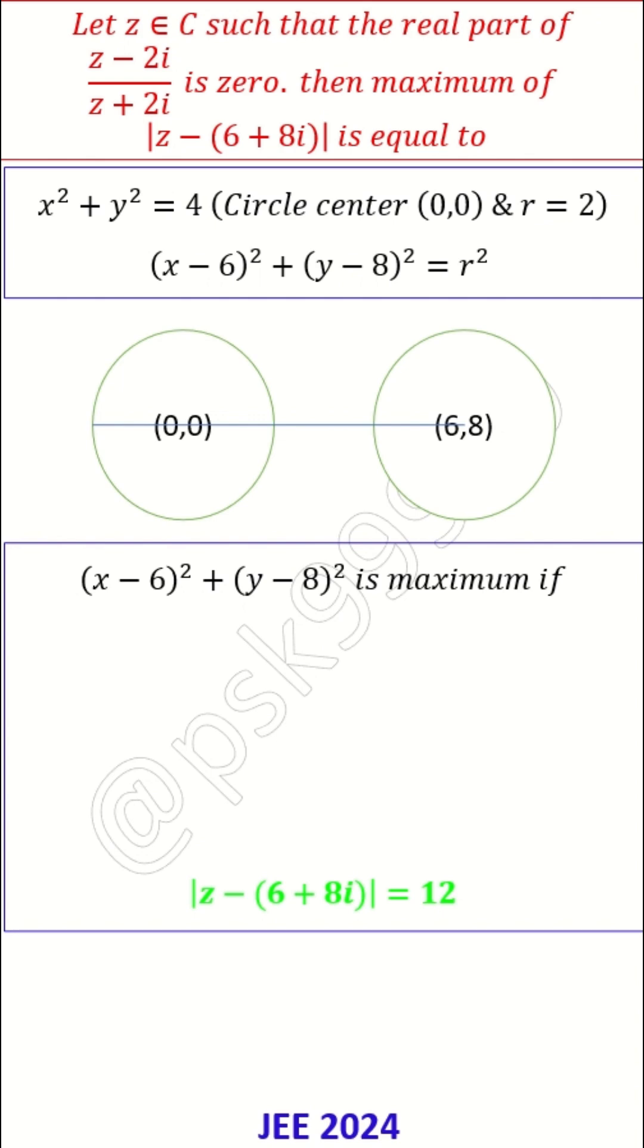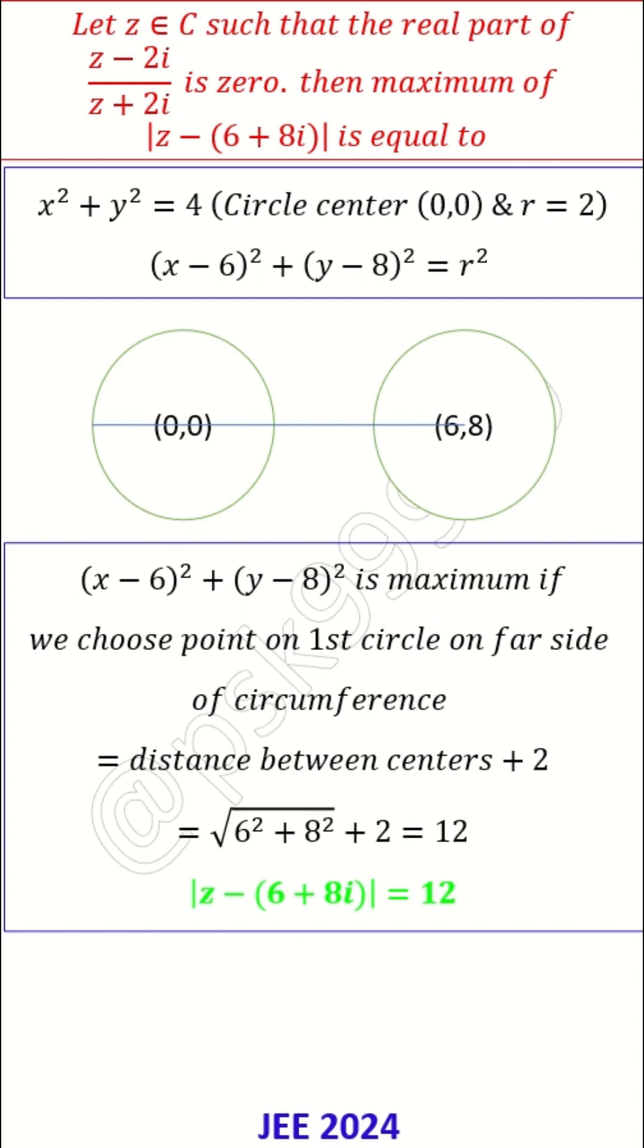Which means the expression is maximum if I choose a point on the first circle on the far side of the circumference, which is nothing but the distance between the centers plus the radius of the first circle, which is 2. The distance between centers is nothing but √(6² + 8²), then plus radius is 2, so which is 12, is the answer.